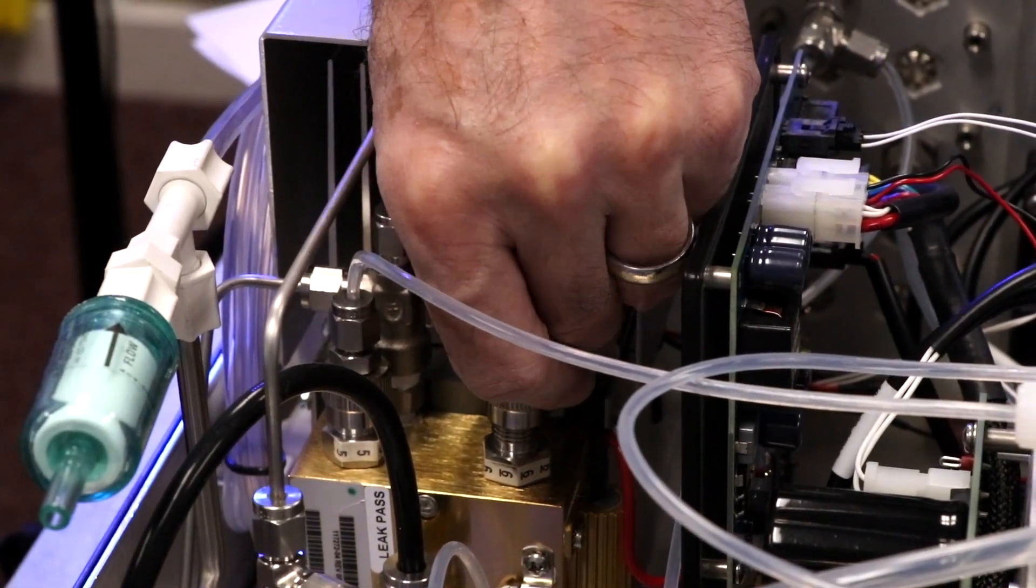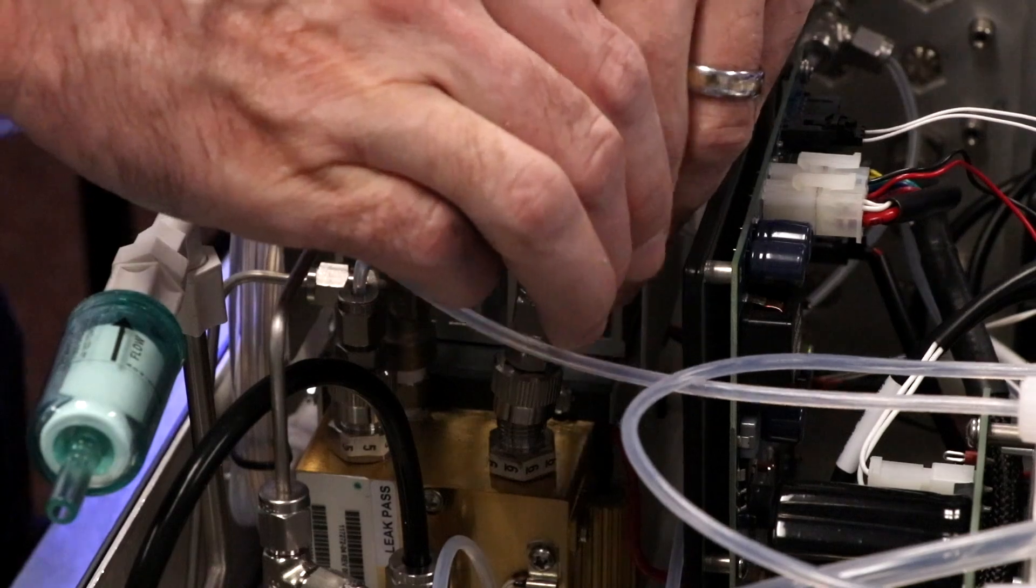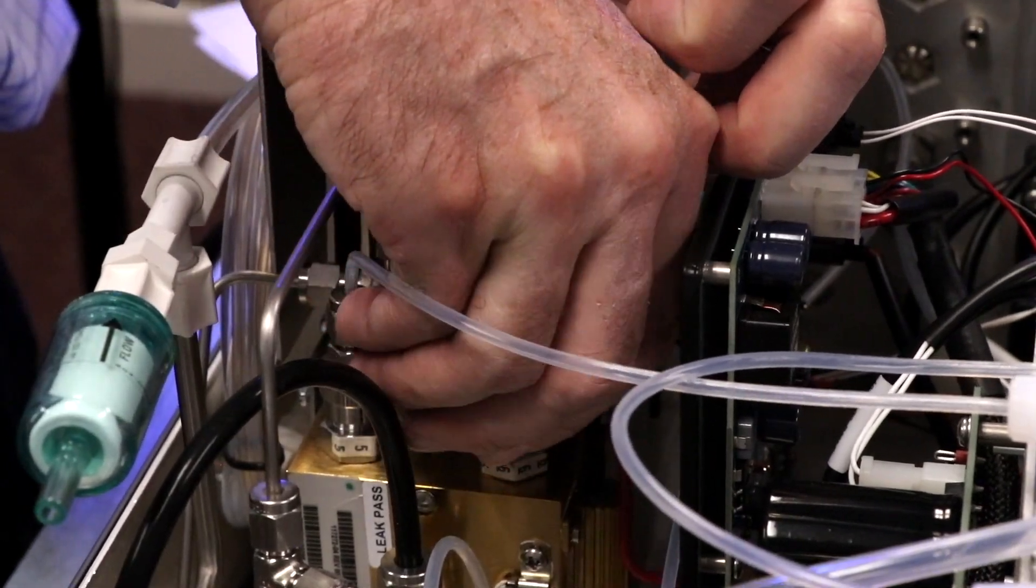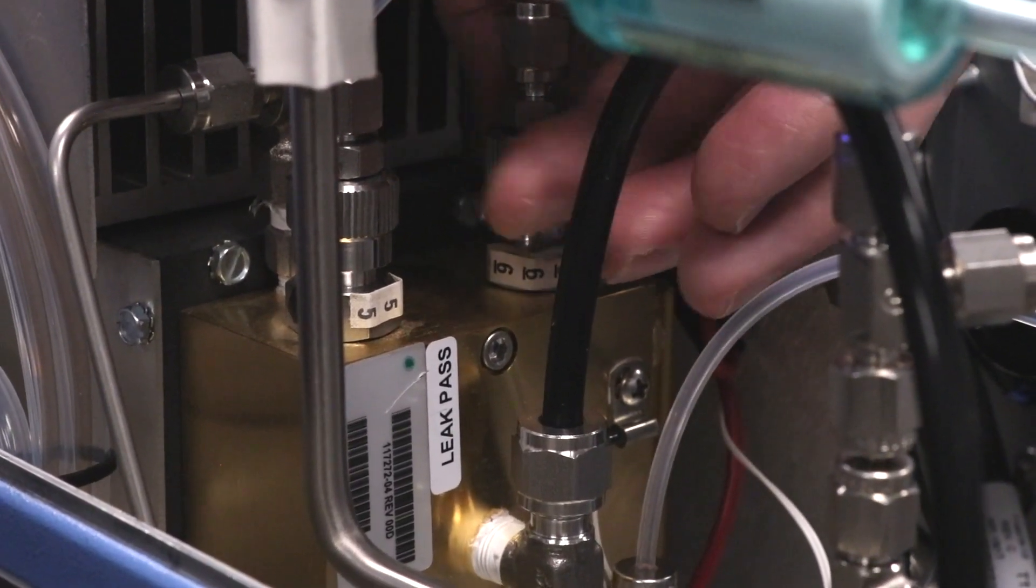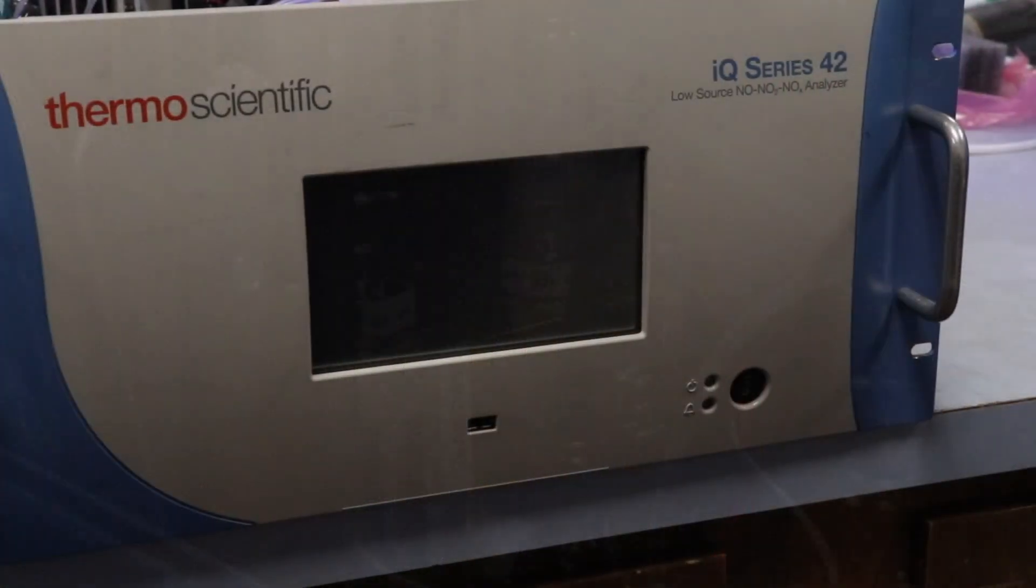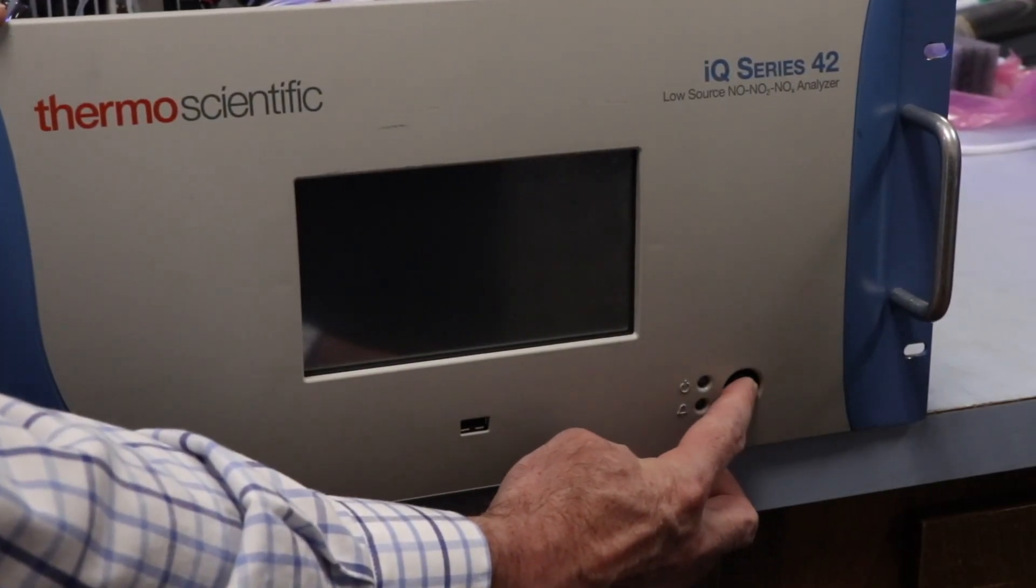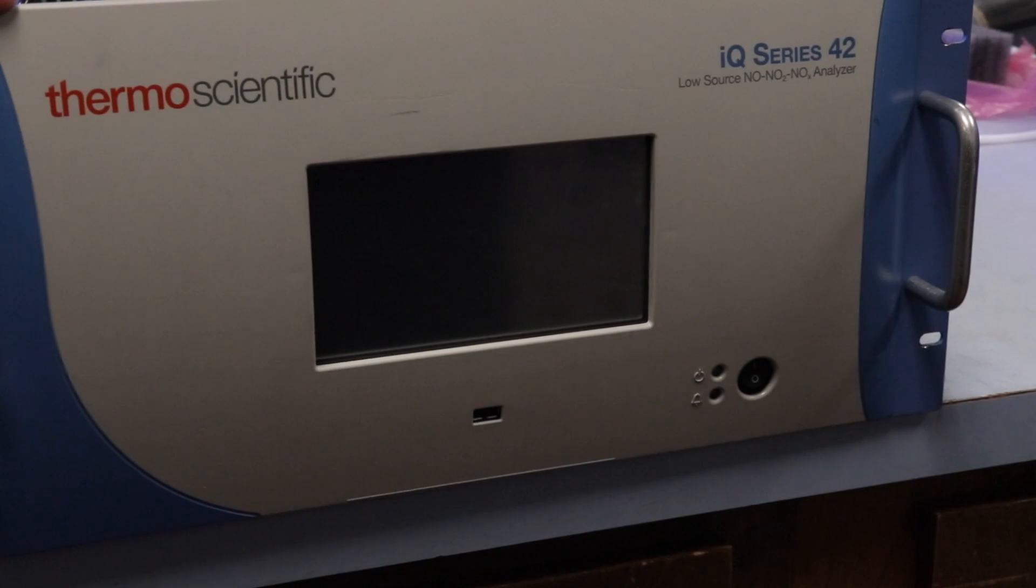Reconnect the tubing to the top of the fitting, being careful to insert the ferrule and O-ring properly, and tighten the knurled nut finger tight. You can now reinstall the cover, connect to power, and turn on the instrument.